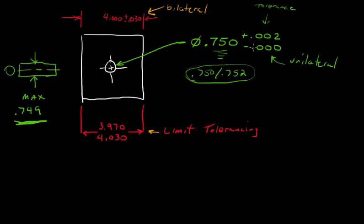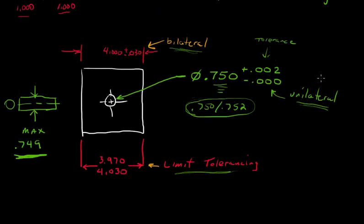So the three methods of tolerancing we've covered here are: bilateral, which is probably the most common; limit; and unilateral. That's going to do it for our discussion today, introducing us to the concept of dimensioning and tolerancing.